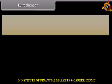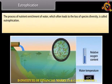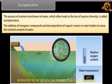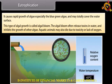Eutrophication increases the nutrient content of water. It causes rapid growth of algae, especially blue-green algae, and may totally cover the water surface. This type of algal growth is called algal bloom. The algal bloom often releases toxins in water and inhibits the growth of other algae. Aquatic animals may also die due to toxicity or lack of oxygen.